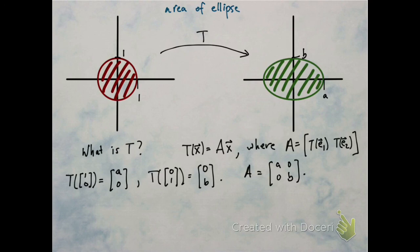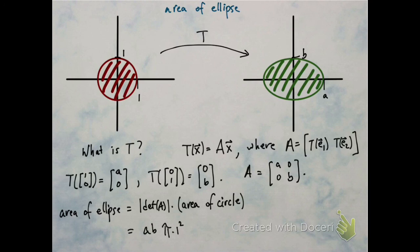That tells me that the standard matrix is [A,0; 0,B]. Then the area of the ellipse is the determinant of this matrix in absolute value times the area of the original circle. So that's AB times π times 1², so that's π times A times B.